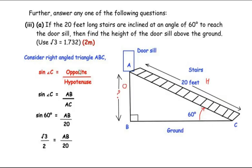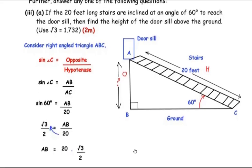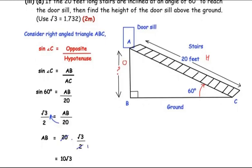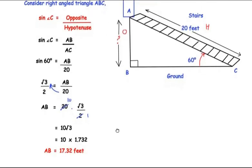Considering right-angled triangle ABC: sin(C) = AB/AC. With angle C = 60°: sin(60°) = AB/20. Since sin(60°) = √3/2, we get √3/2 = AB/20. So AB = 20 × √3/2 = 10√3. Using √3 = 1.732: AB = 10 × 1.732 = 17.32 feet. The height of the dorsal above the ground is 17.32 feet.